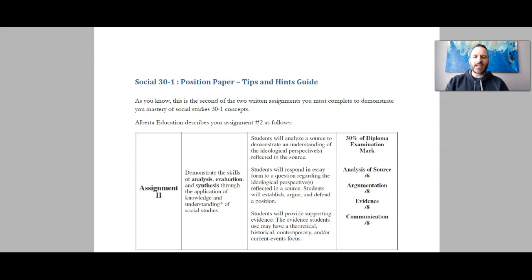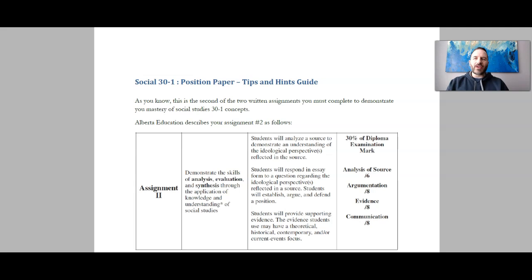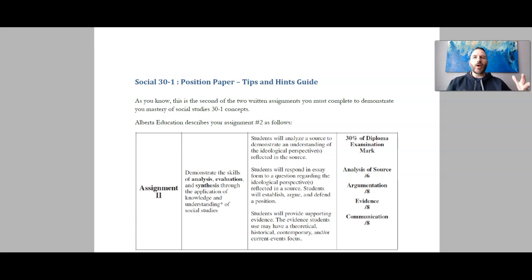Assignment number two, as it says on the screen: students will analyze a source to demonstrate an understanding of the ideological perspective. When you get a source, the source takes a certain perspective and generally the sources are either economic or political in nature. If it's economic, generally it's going to be something regarding how to have the strongest economy. Some sources are going to be pro-capitalism, some sources are going to be pro-socialism. Other topics will be political and it's going to be about government control — how much control is the right amount for the government to have in society.